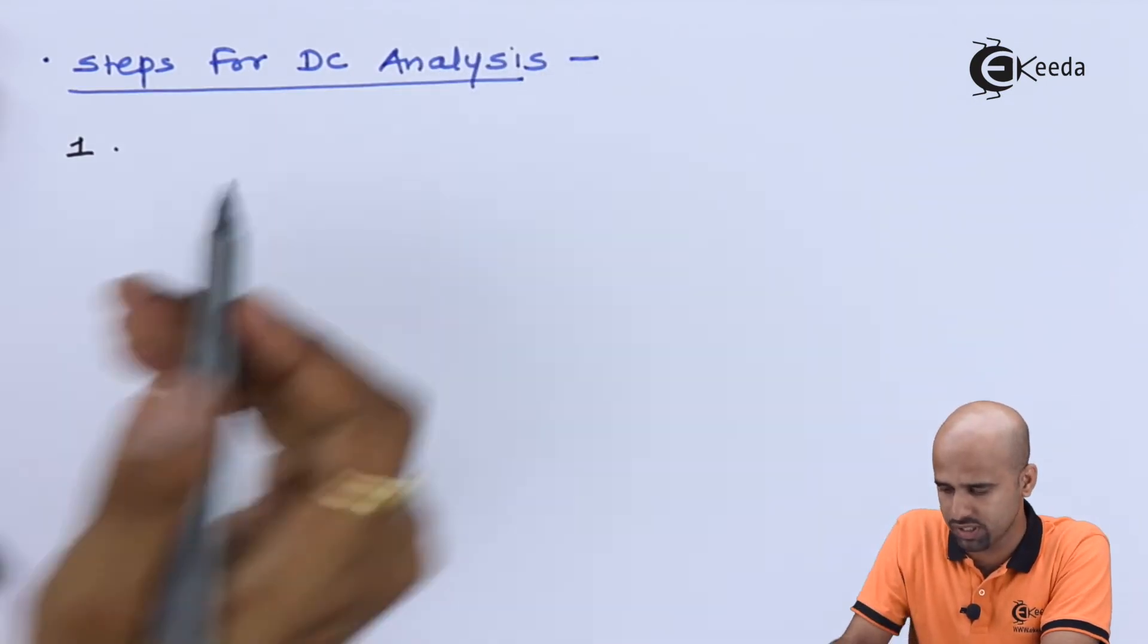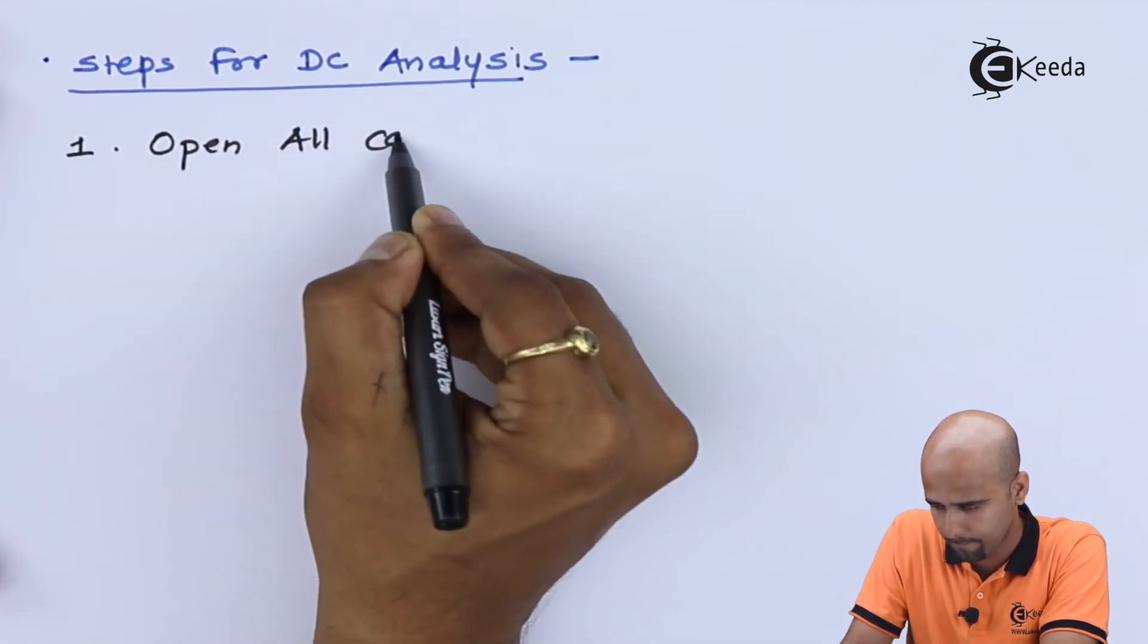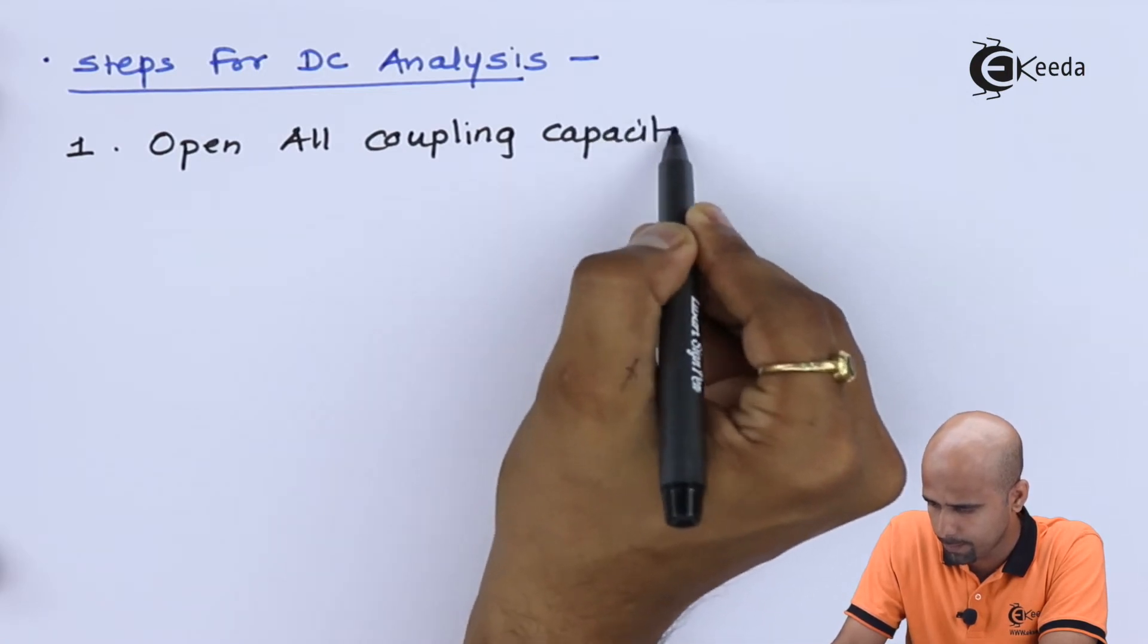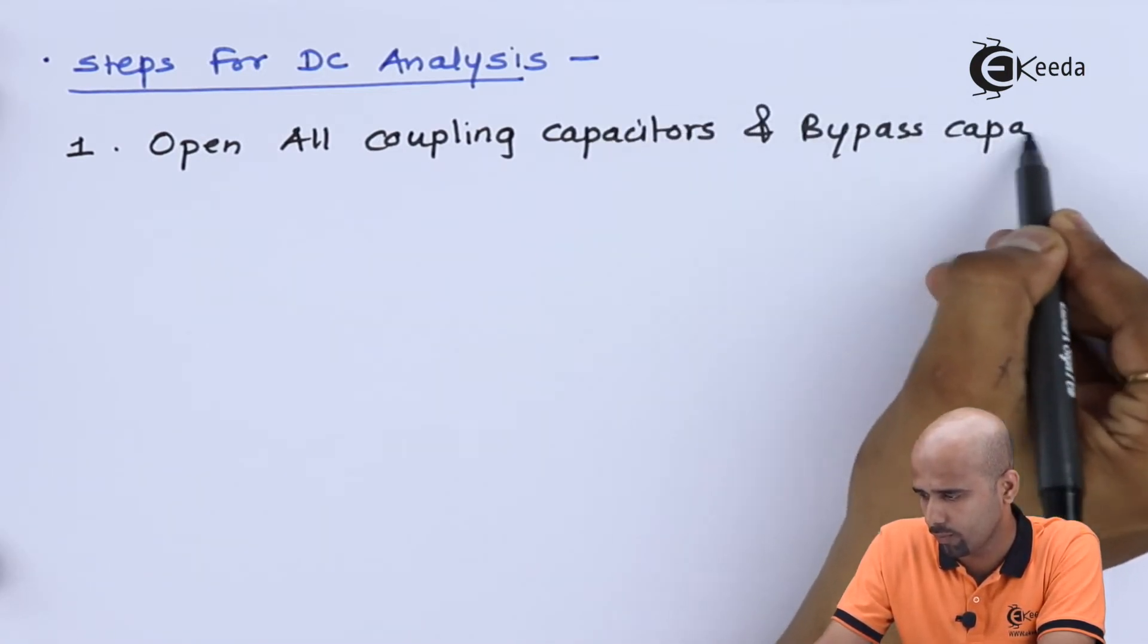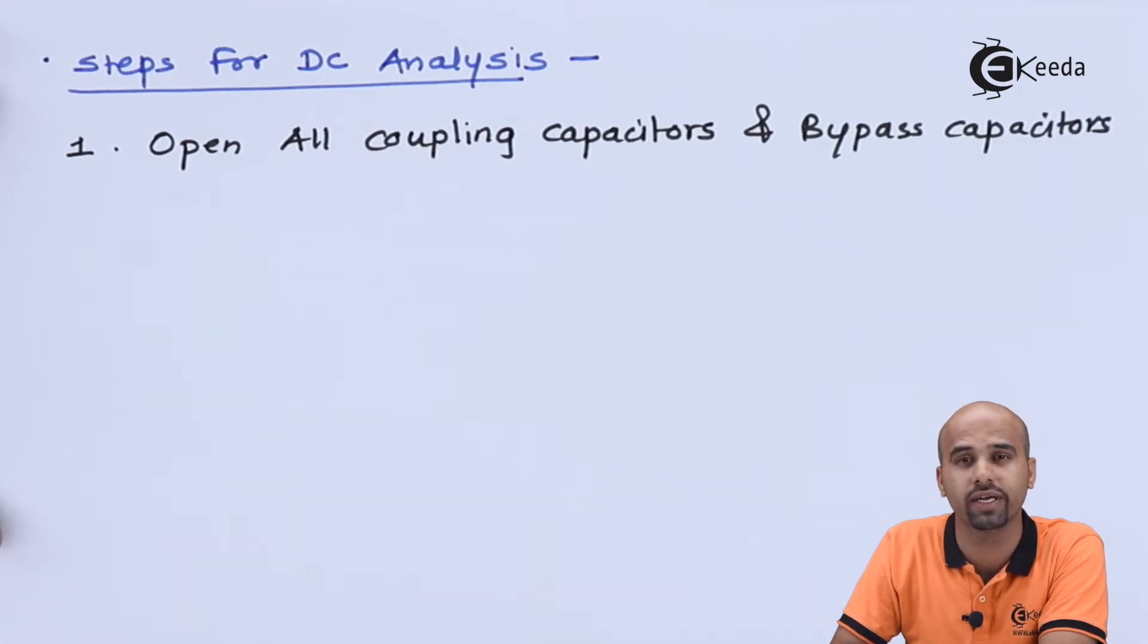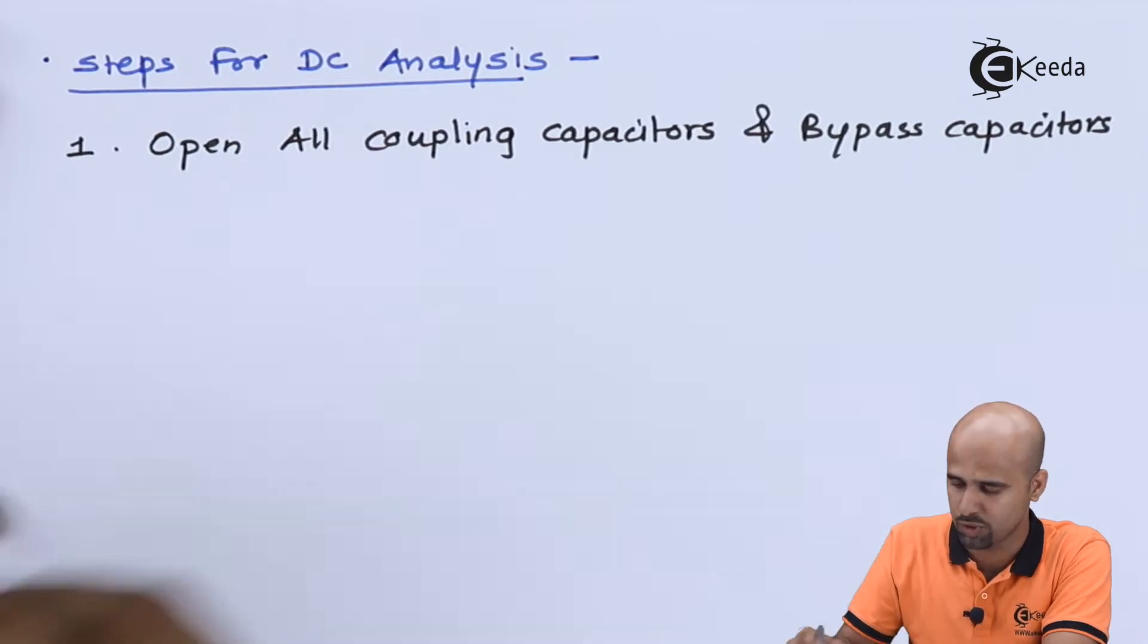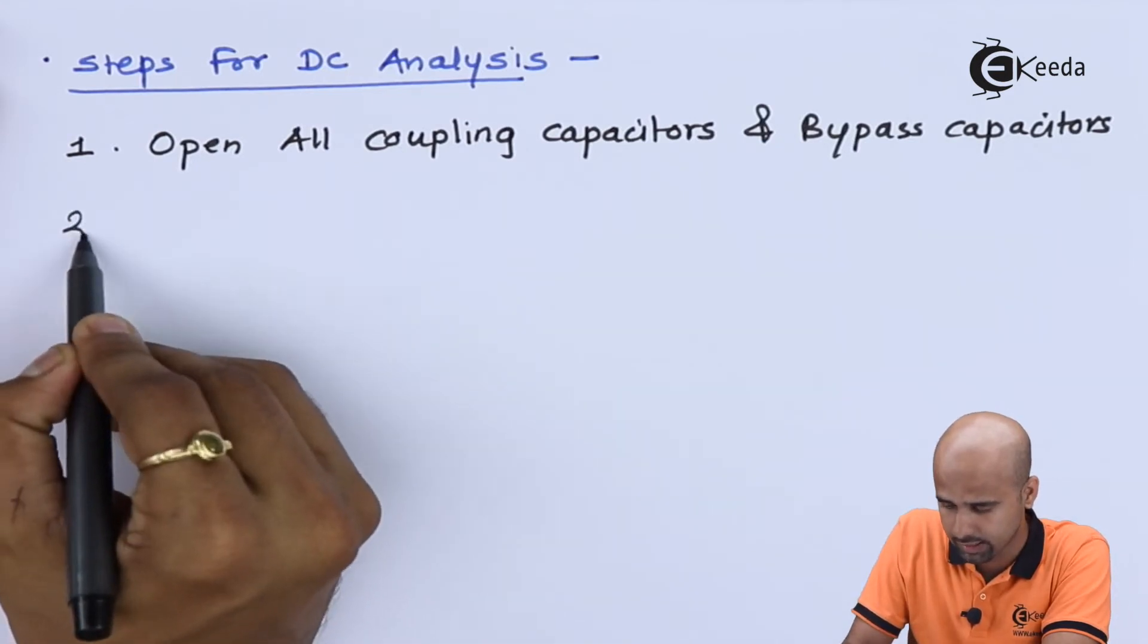This is all about the simple mathematics as far as DC analysis is concerned. Then we will move towards actual steps for DC analysis. How to solve the numerical. The first important step is open all coupling and bypass capacitors. This is because we are doing DC analysis. We are not incorporating any AC signal out of it or into it. So we are at all not concerned with AC signal. And that is why we are not at all concerned with the frequency.